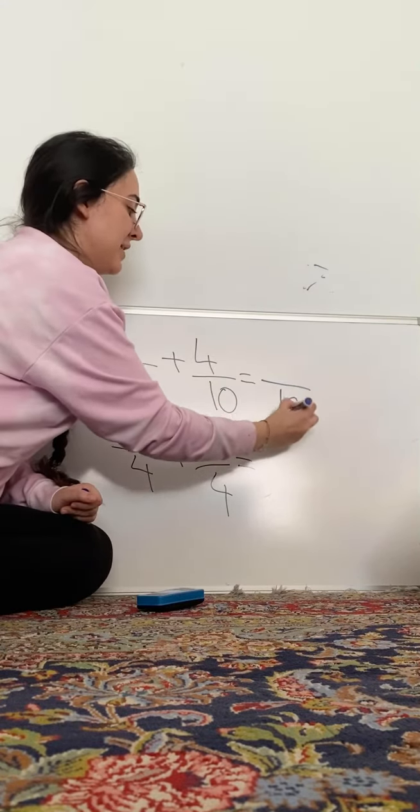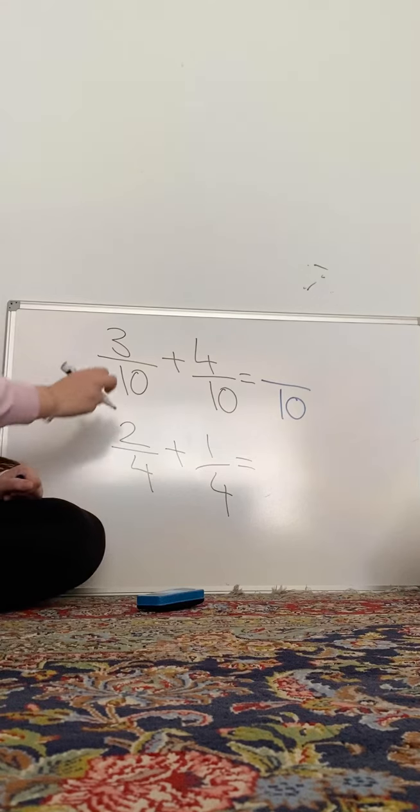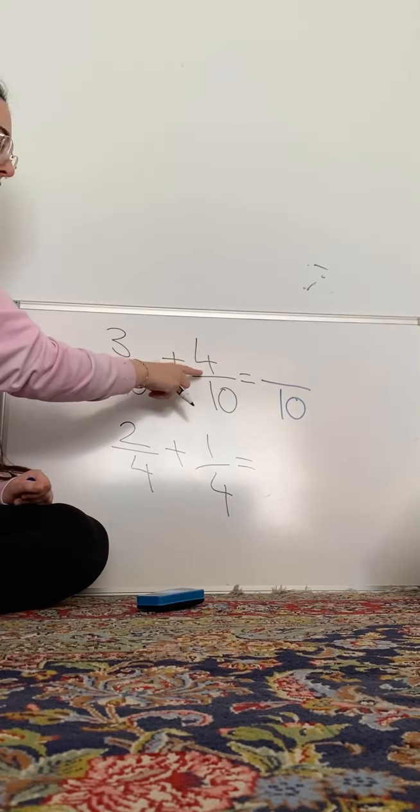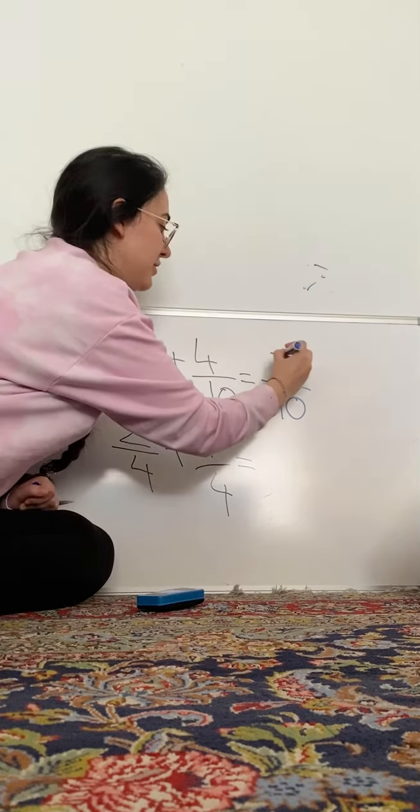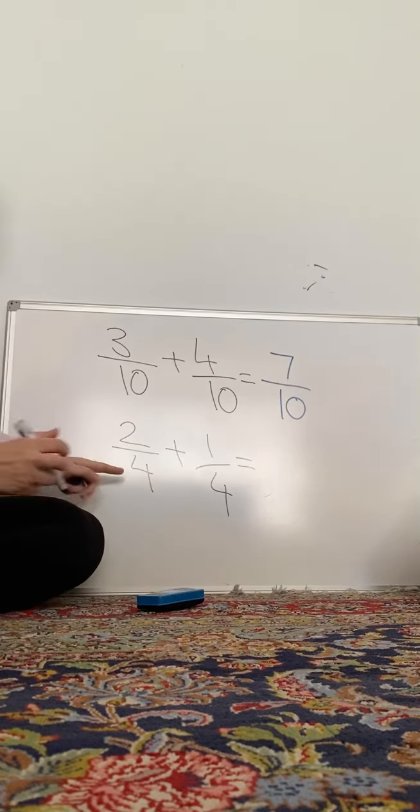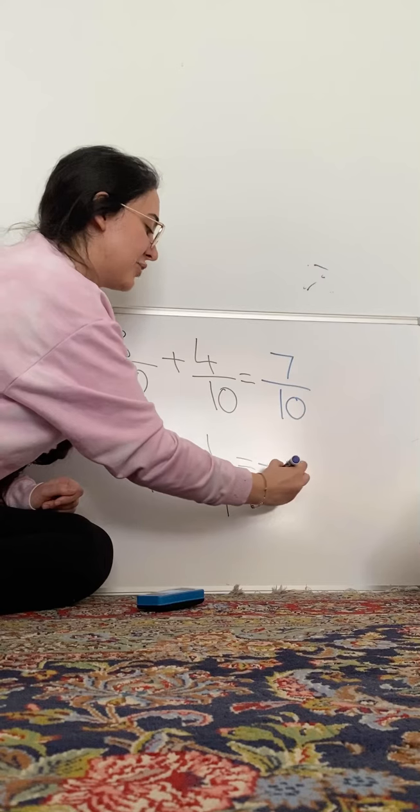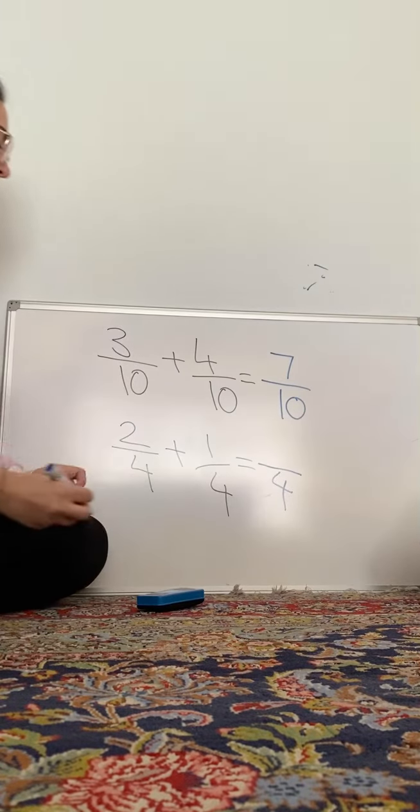Okay. So, remember, denominator always staying the same. So, our denominator is 10. Numerator 3 plus 4 is 7. Good. 7 tenths.